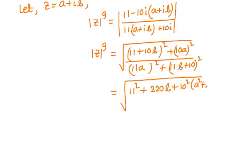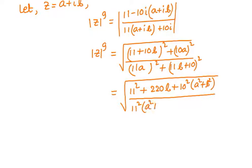Expanding, the RHS numerator becomes root over 11 squared plus 220b plus 10 squared times (a squared plus b squared), and the denominator comes out as 11 squared times (a squared plus b squared) plus 220b plus 10 squared. This is the value of modulus of z to the power 9.